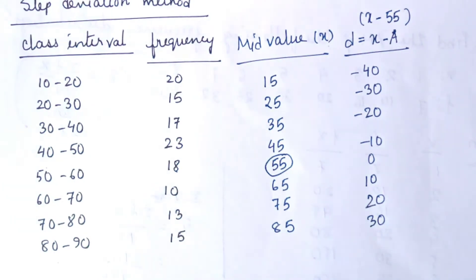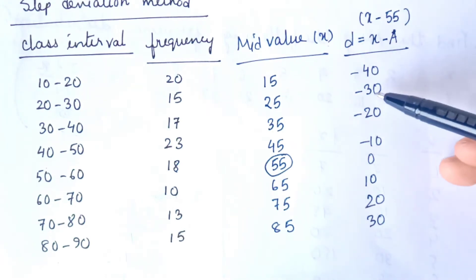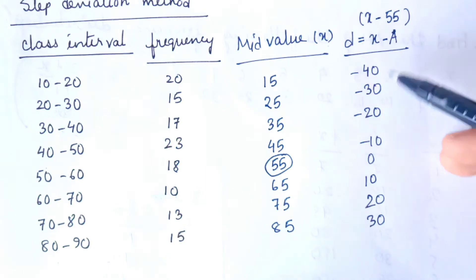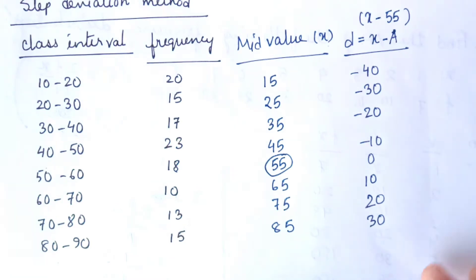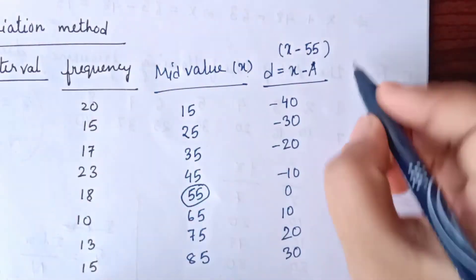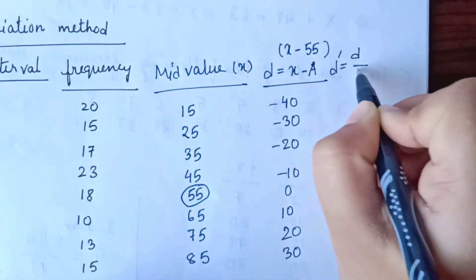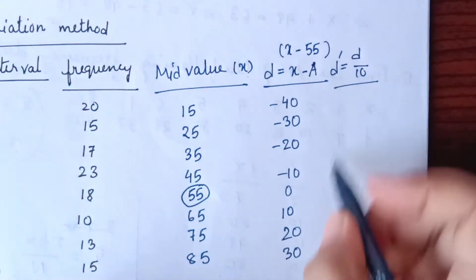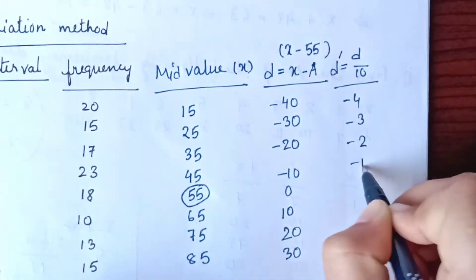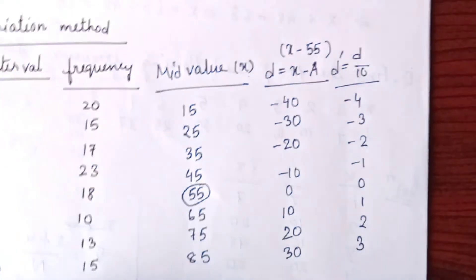If you observe the values, you can see that minus 40, minus 30, minus 20, minus 10, 10, 20, 30 — all these values are multiples of 10. So in the next column, we find D dash, which is D divided by 10. The values will be minus 4, minus 3, minus 2, minus 1, 0, 1, 2, and 3.